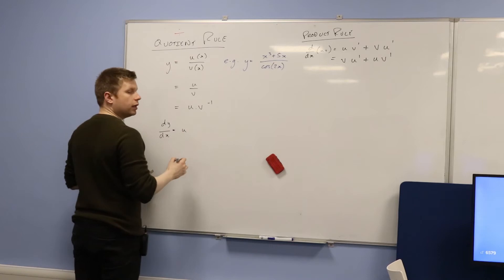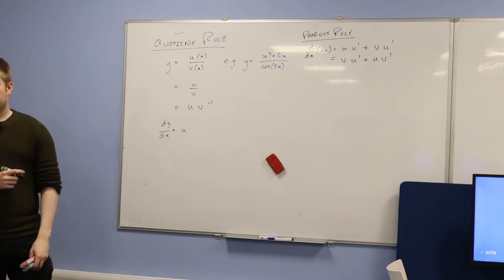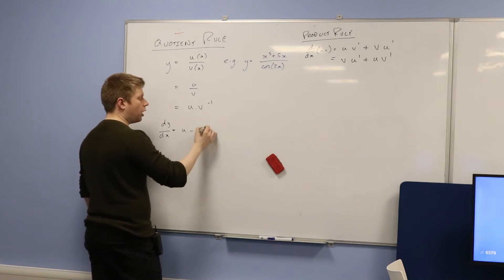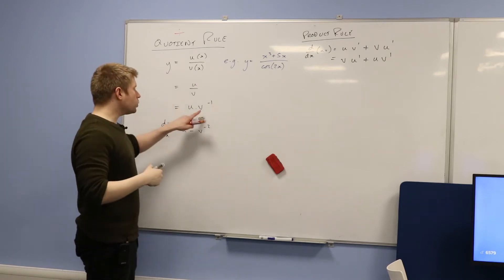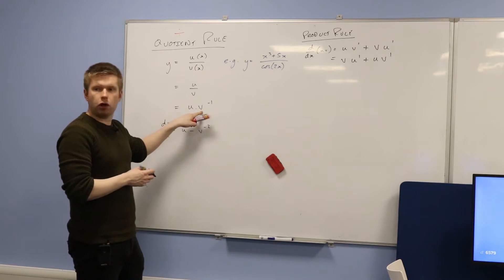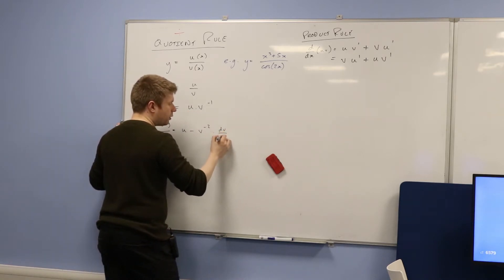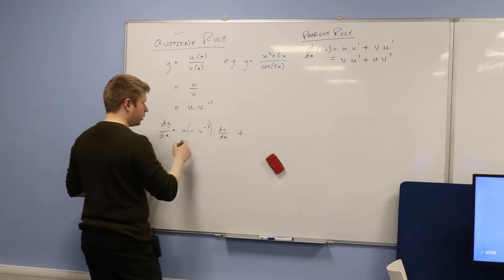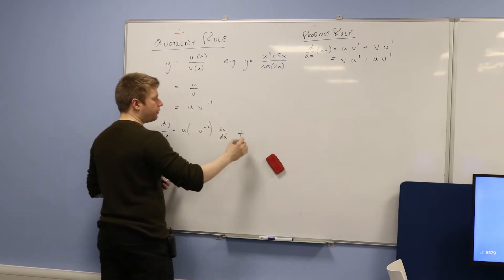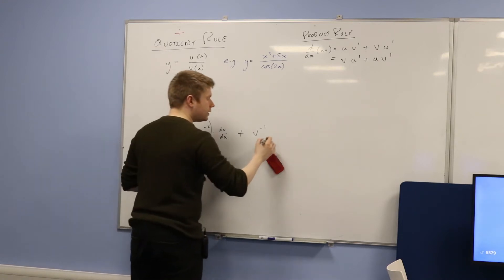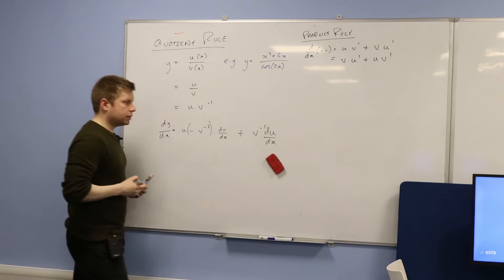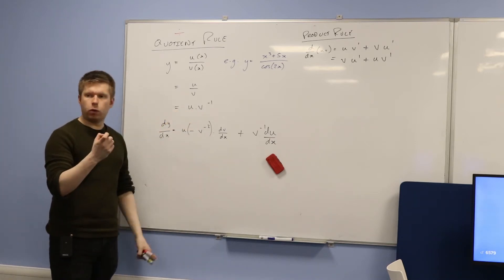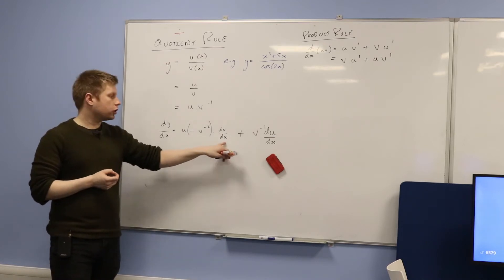So, if I want to find the derivative, I should just use the product rule. Product rule says: take the first function, leave it alone, multiply by the derivative of the second function. Now, you've got to be careful here because you've got to use the chain rule. If you bring the power down, it becomes negative. Leave the inside function alone, reduce the power by one — it becomes negative two. But then you need to multiply by the derivative of the inside function. Remember, this is a function itself. V is a function. So, I need to multiply by the derivative of v. Presumably it's a function of x, which it is. And then add — the other way round — leave the first function alone, v to the negative one, multiplied by du by dx.